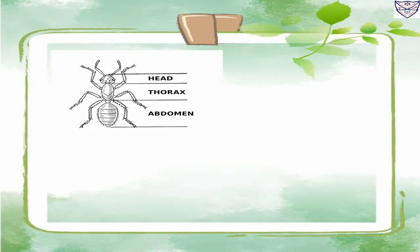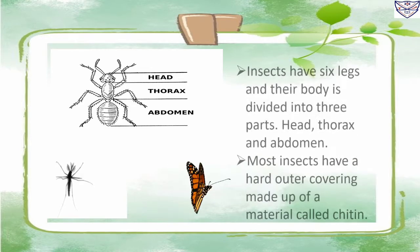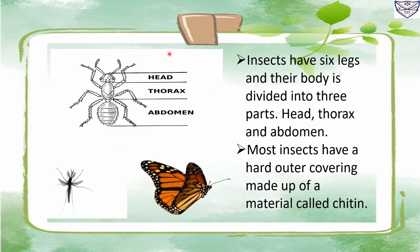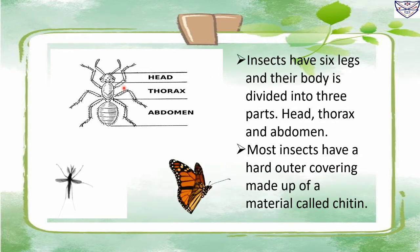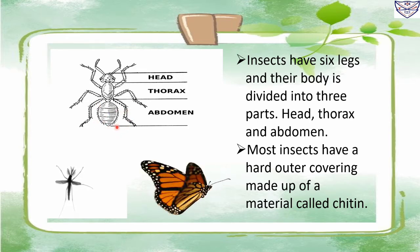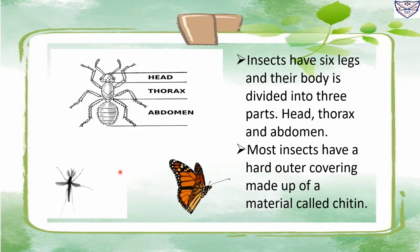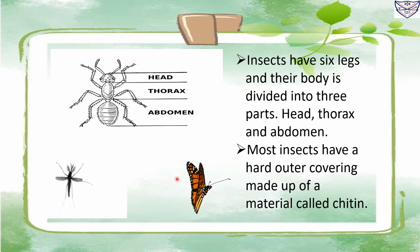Insects have six legs and their body is divided into three parts: head, thorax and abdomen. Most insects have a hard outer covering made up of a material called chitin. A few insects such as mosquitoes and butterflies can fly.